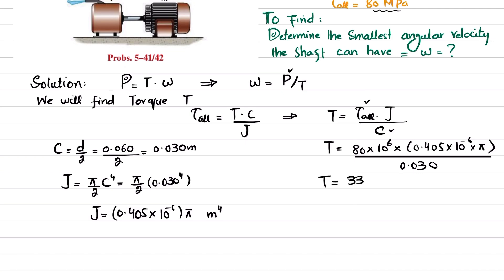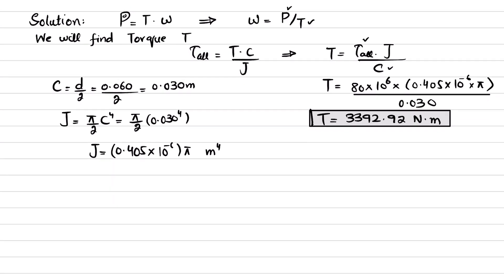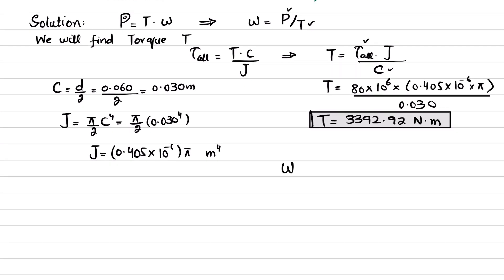When you solve this, torque comes out to be 3392.92 Newton-meters. Now you have this torque, so move to the formula: ω equals angular velocity equals power divided by torque.